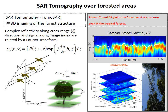Below, we can also show a reflector from a tower — a well-known calibration target. In the tomogram we can see layer by layer the vertical reflectivity profile of the tower.